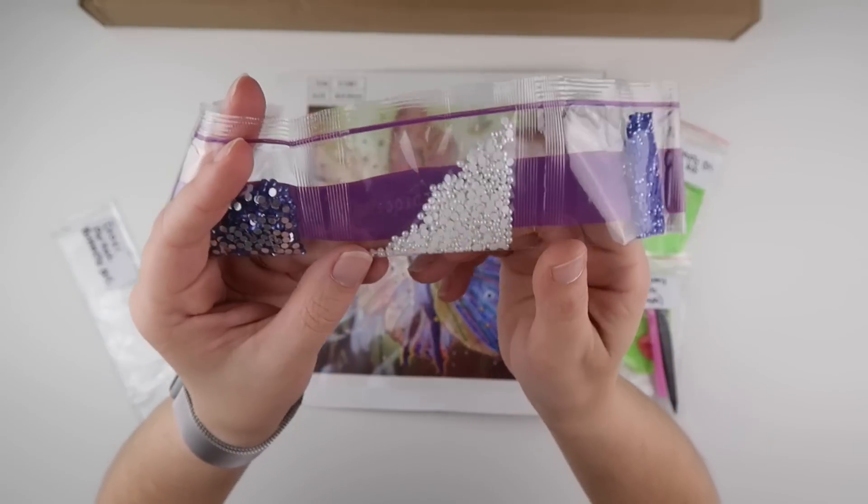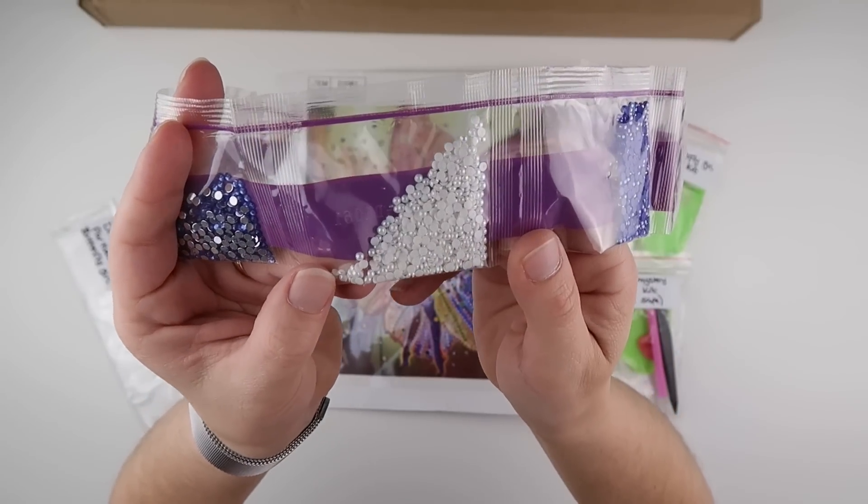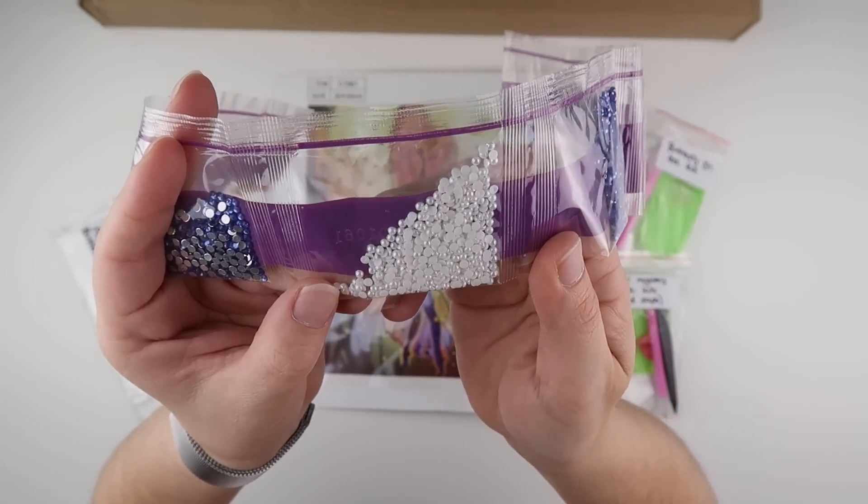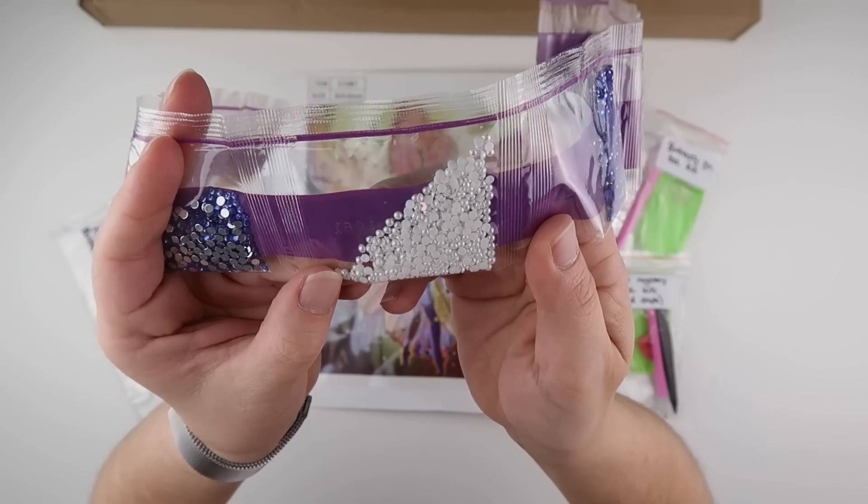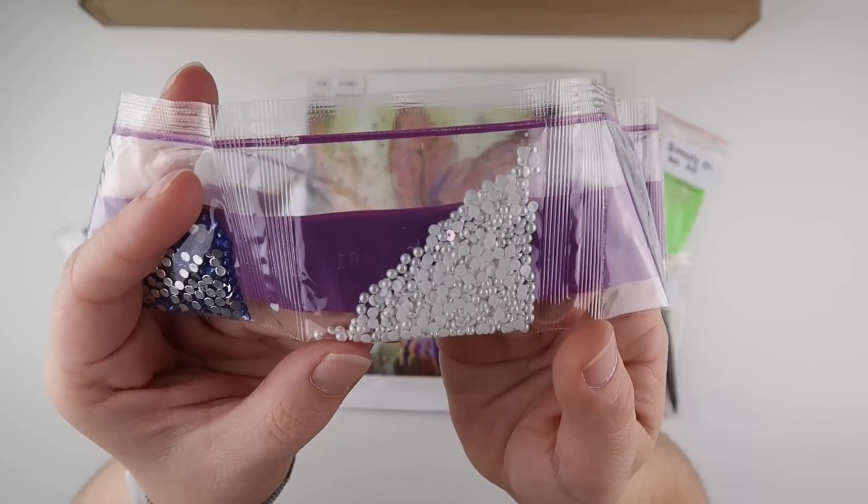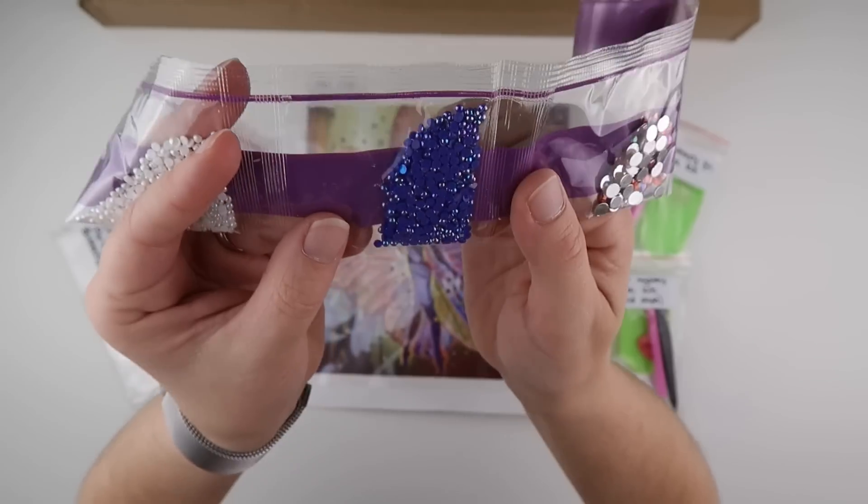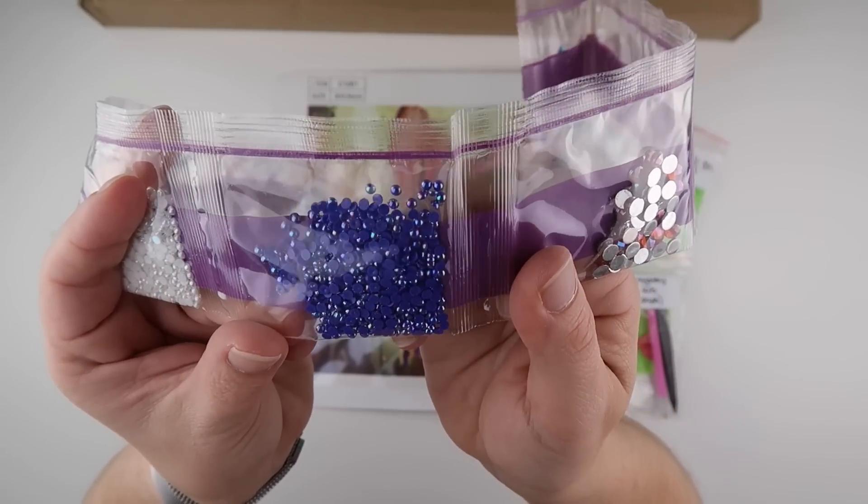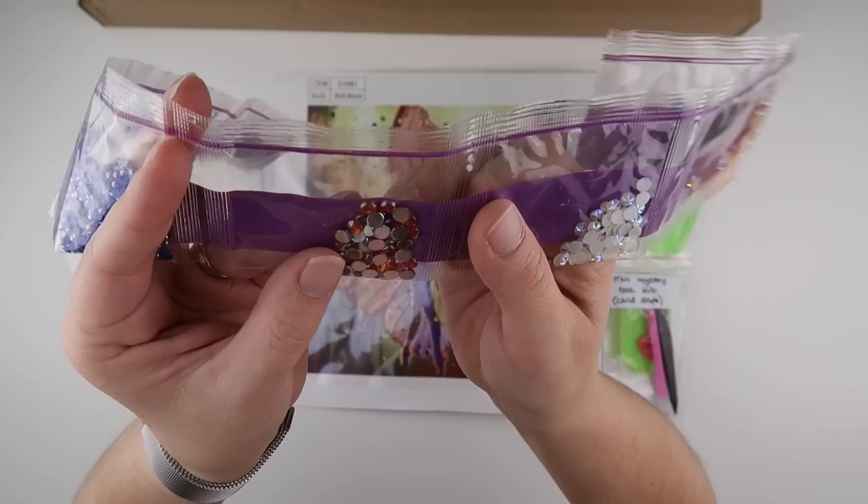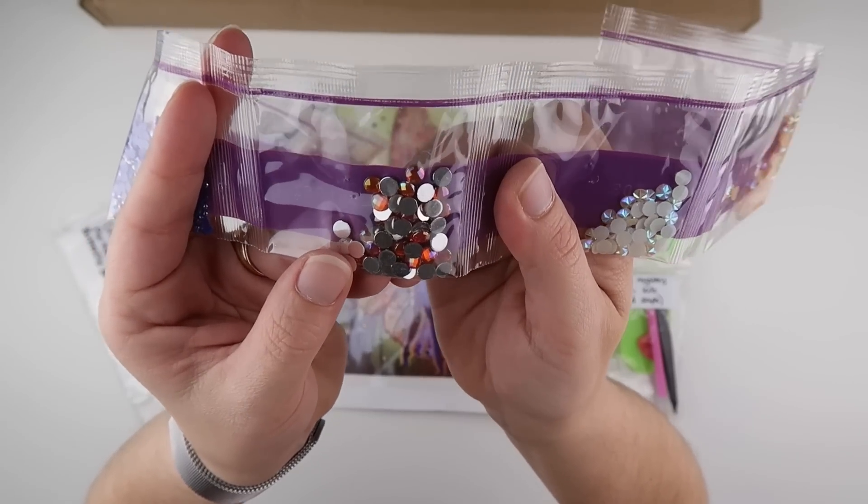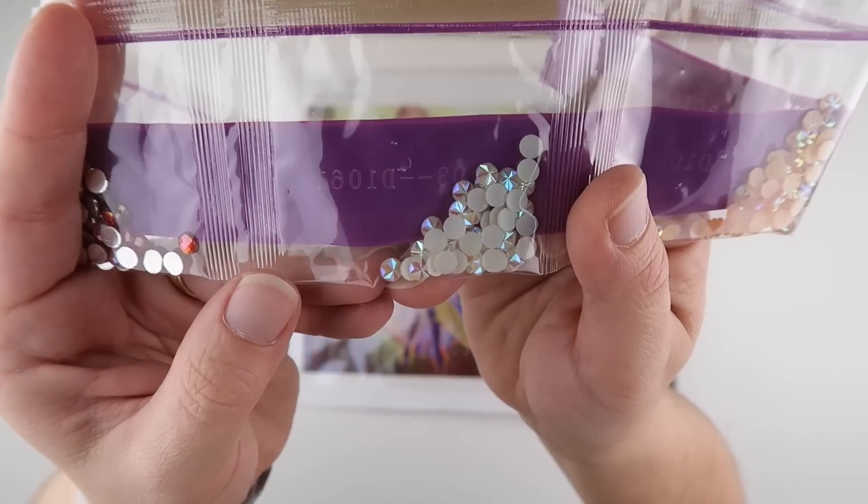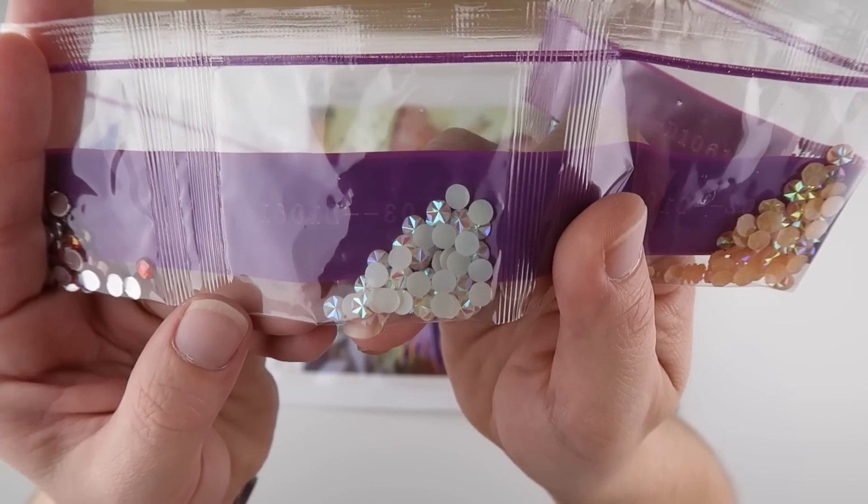Then we have what I call more of a pearly type. They have an AB coating but they're not got any facets, so they're just like half a pearl. We've got the same in blue. They don't have any facets but they have that gorgeous AB coating. Then we've got some bigger ones in orange, and they're like those little star buttons you used to get on your clothes as a child.